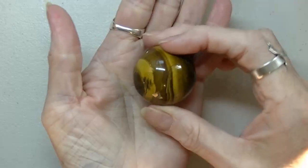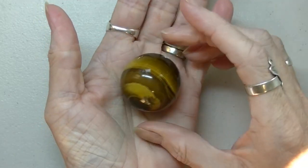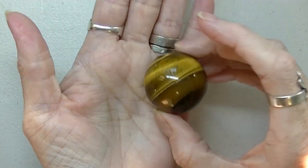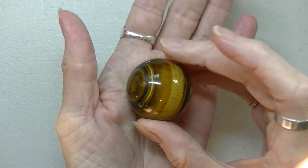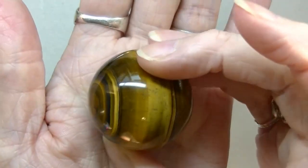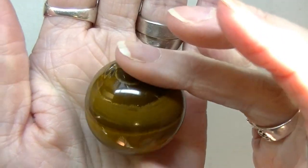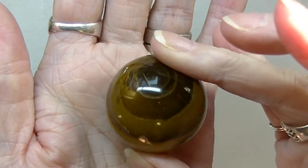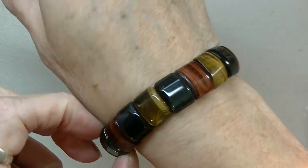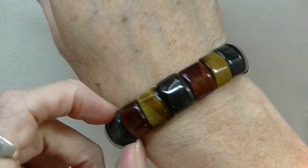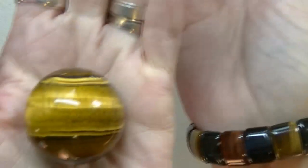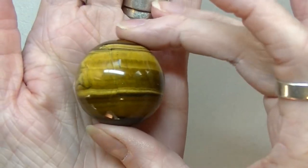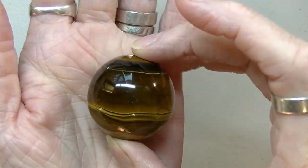This next one everybody I'm sure will know exactly what it is: tiger's eye. That's a tiger's eye sphere, isn't that beautiful? I have a tiger's eye bracelet I don't know if you guys have seen it in some of my tutorials. Oh, I just love it.